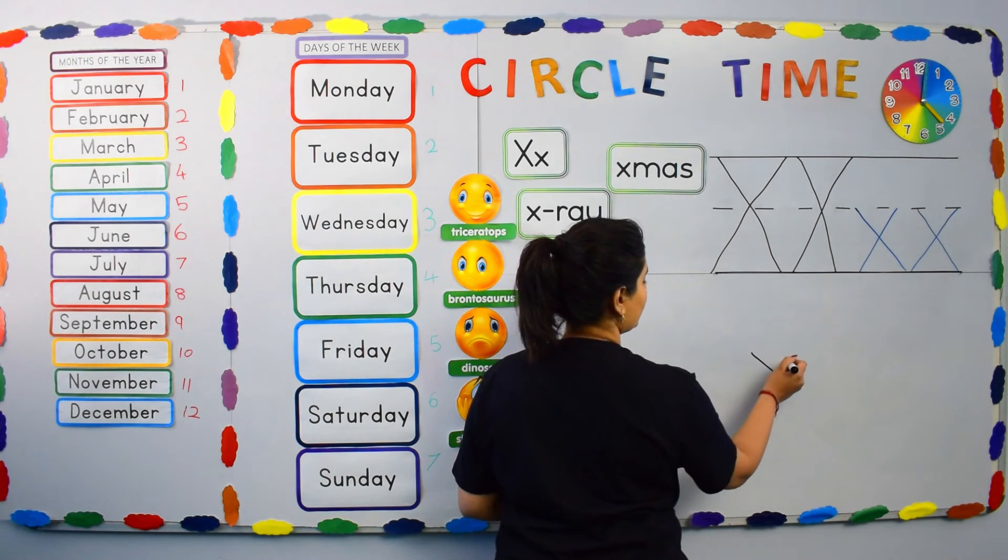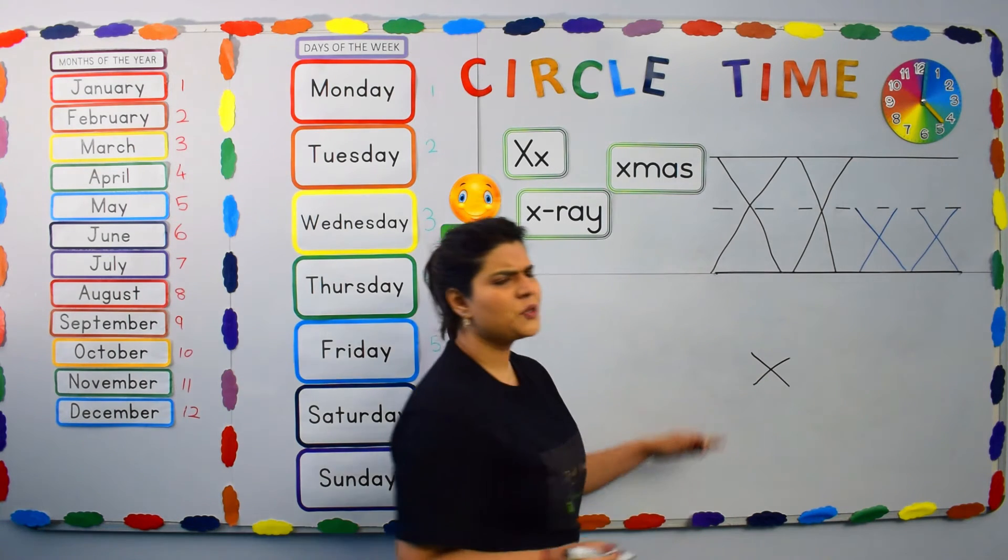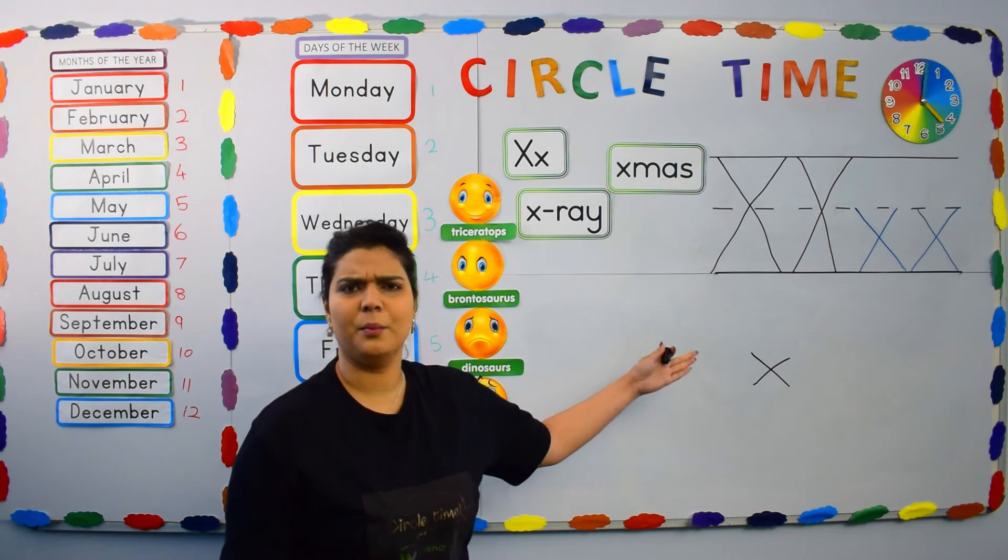We start off by using a small letter X. Stroke number one, stroke number two. Now, how do we make this look like a musical instrument?